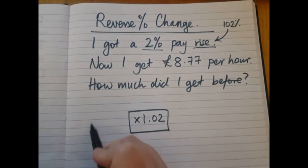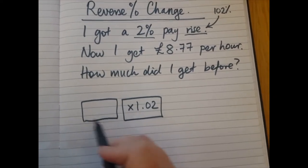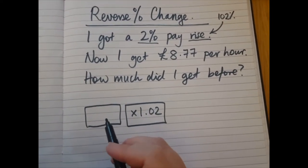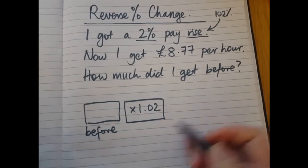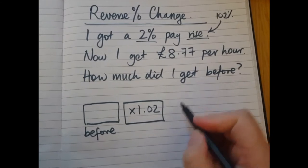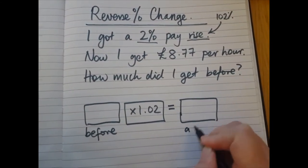So let's do our equation. The previous amount goes in here. So this is the before number, before the pay rise. I times it by 1.02 and I will get the amount after the pay rise.